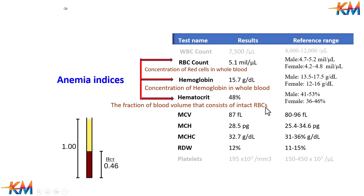As shown in the picture, blood is collected in a test tube and centrifuged. The red portion is then compared to the total volume of the blood sample — here it is about 45 percent.